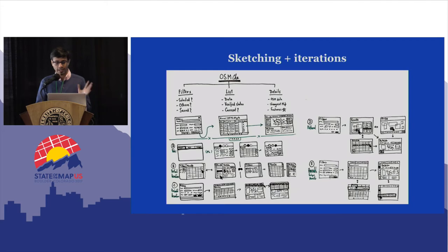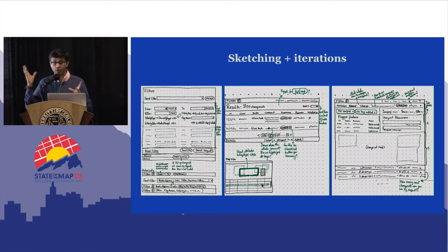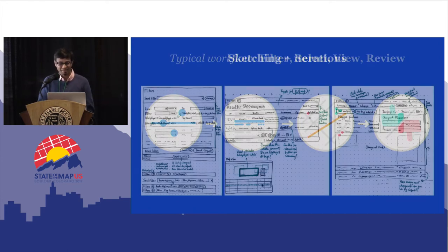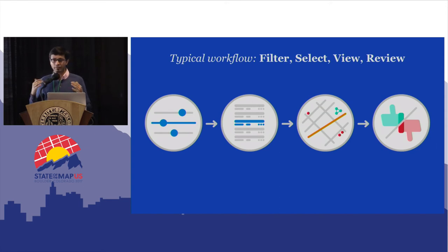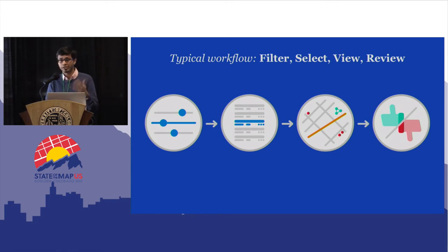We started brainstorming — thinking about different ways to show changesets: should we show a map with bounding boxes, a list view, a click-through multi-panel view? The overall workflow became very simple: you filter for a particular type of change, go through the list of changesets, pick the ones you want to evaluate, and in individual changesets you look at how they're visualized on a map, then give a thumbs up or thumbs down or indicate how severe the change was.